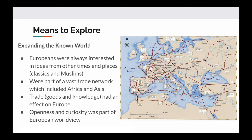Europeans were always interested in other places — it's no different than the books we read or movies we watch. We want to escape and learn about different places. The Muslims and the Europeans were part of a vast trade network, as you can see on the map. Goods and knowledge from Africa and Asia had a huge effect on the Europeans, and this became a part of their worldview.